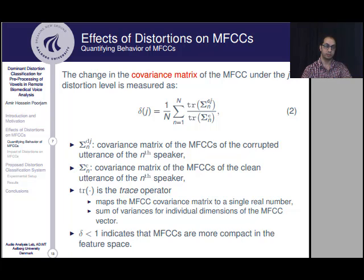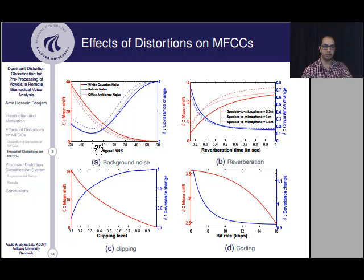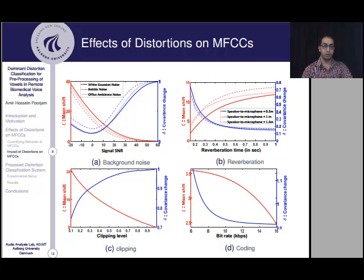These figures illustrate the impact of different types and levels of distortion on MFCCs. The left vertical axis represents the amount of mean shift and the right vertical axis represents the covariance change. The left upper plot shows the impact of different types and levels of noise on the mean and covariance matrix of MFCCs. Variable noise levels shift the mean of MFCCs to different but predictable regions in the feature space, and the amount of shift monotonically increases as the level of noise increases. The covariance of noisy MFCCs is always smaller than that of the clean one. The right upper plot shows the impact of room reverberation on MFCCs — the mean shift increases as the reverberation time increases.